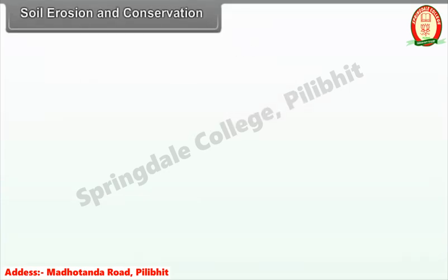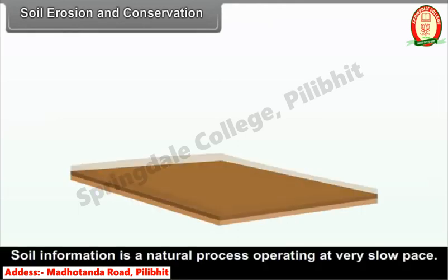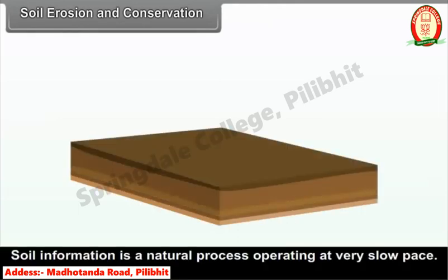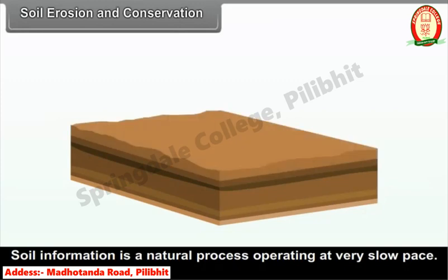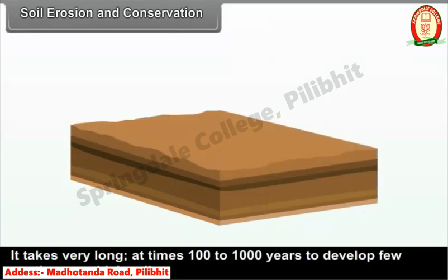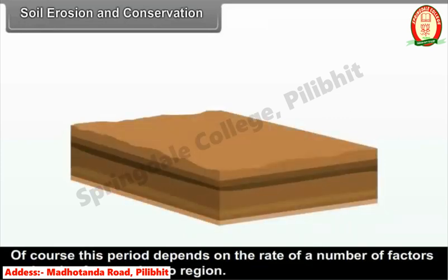Soil formation is a natural process operating at a very slow pace. It takes very long — at times 100 to 1000 years — to develop a few centimeters of thick soil. This period depends on a number of factors and varies from region to region.